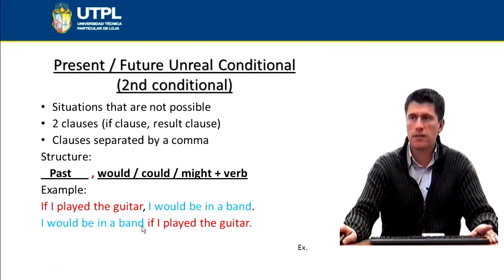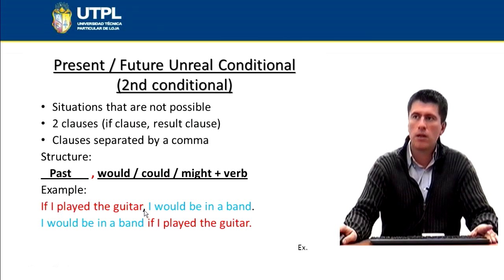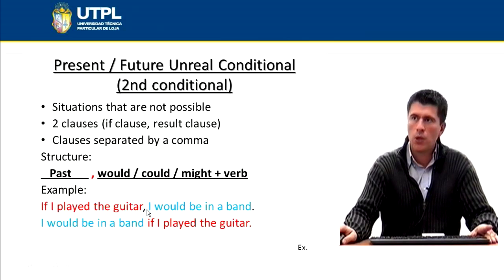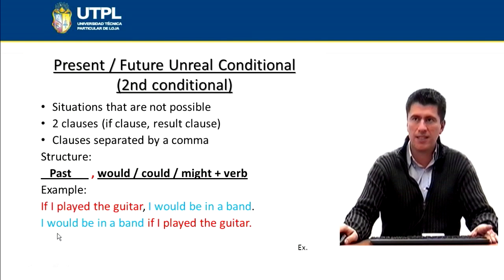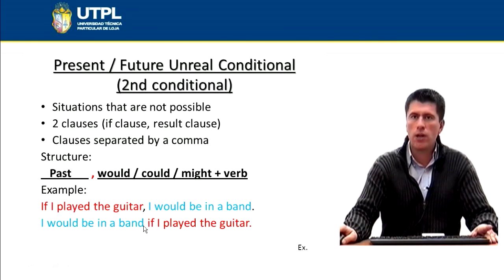There is a difference in this sentence: we're not using the comma anymore. So always remember — if you start with the if clause, you're going to have a comma after it. But if you start the sentence with the result clause, you don't need the comma.